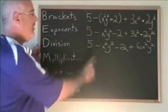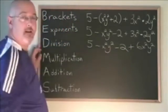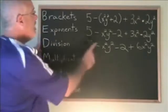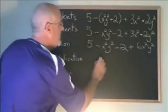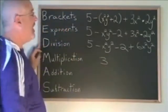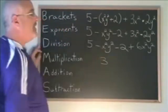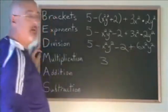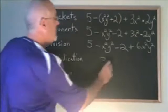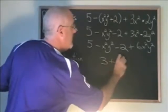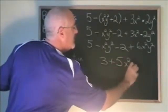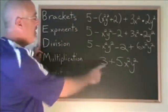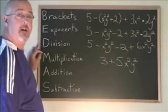Now, I have nothing but subtractions and additions, and I am going to combine similar terms. With the constant terms, we have 5 minus 2, which gives us 3. With the x squared y squared, we have negative 1 x squared y squared plus 6 x squared y squared, which gives us positive 5 x squared y squared. There are no more operations that can be done, because I no longer have any similar terms. So this is the answer.